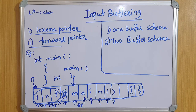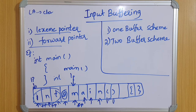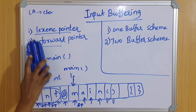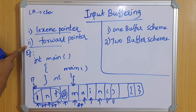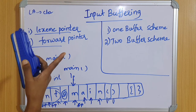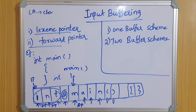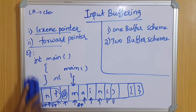So in input buffering we have two types: first is the one buffer scheme, and the second is the two buffer scheme. By the name itself you can understand — in the one buffer scheme we use only one buffer, meaning one block only.